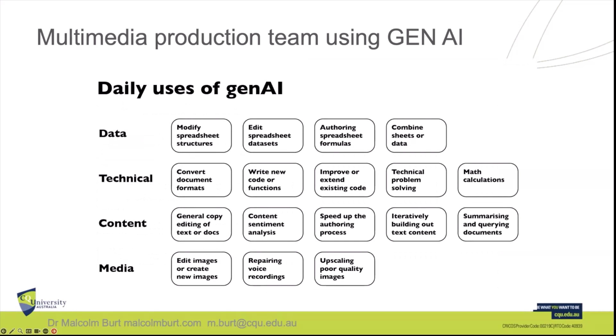Our daily uses of generative AI: we're always using text-based generative AI to tweak, fix, make things sound better, cut 500 words without messing up the meaning. In data, there's a lot of spreadsheet work. Technical: converting formats, writing code, improving or extending code, math calculations. General content editing and text documents. Content sentiment analysis — you can say 'make this sound more formal,' or chuck an email in and say 'does this sound rude? I want this to sound more professional.' Querying documents: if you use Google NotebookLM, it's unbelievable for putting in a bunch of publications and saying 'give me the top-line summary, three points from each document,' and it does it. You absolutely have to check, because it does hallucinate — we know that.